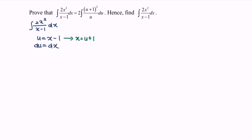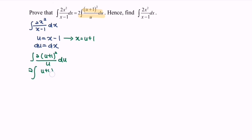Kindly substitute the situation. We get the integral of 2(u+1)² over u with respect to u. From here, we can see that from the question, this is equal to 2 multiplied by the integral of (u+1)² over u with respect to u. And we have proved the situation.